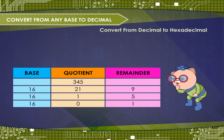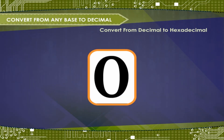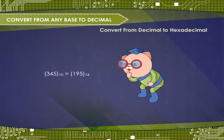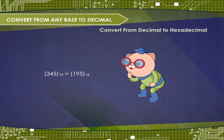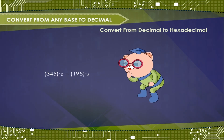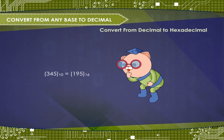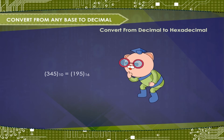Now express the same decimal number 345 in hexadecimal notation. Stop when the quotient is 0. Write the remainders in reverse order as shown. So the answer is 345 base 10 is equal to 159 base 16. Remember, if the remainder is greater than 9, replace it with the appropriate letter A, B, C, D, E, or F.